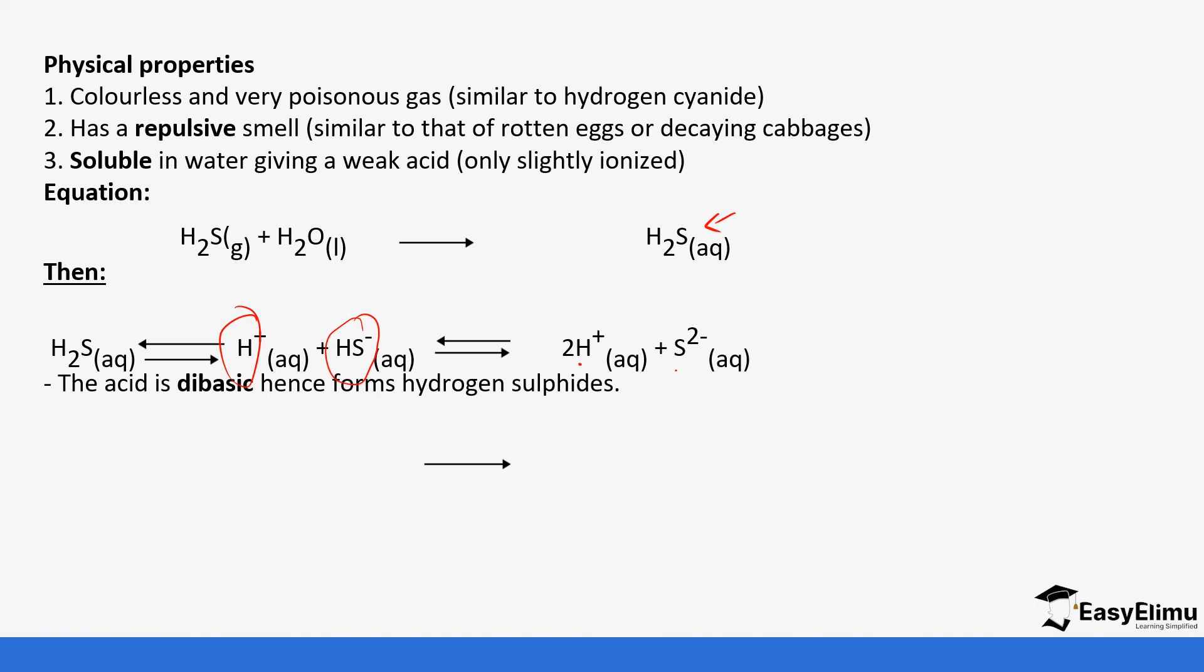It's acidic in nature, so when you react it with bases, for example sodium hydroxide, you form sodium hydrogen sulfide and water. You can see it's not fully being dissociated—the hydrogen ions are not being fully replaced because it's weak, so it's only replacing partially.